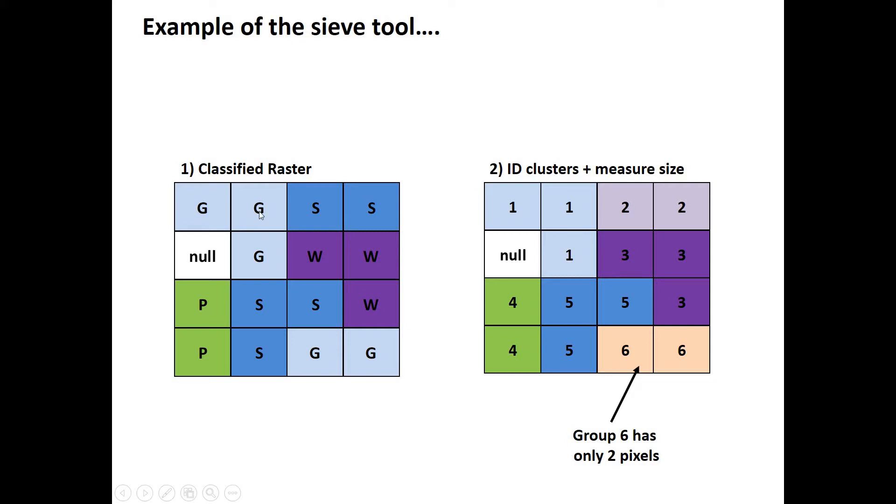Maybe G is ground, S is sand, W is water and so on. The problem is that maybe you have some isolated clusters in here that aren't very big and you want to get rid of them. The way that the algorithm works is first it goes through and it identifies all the clusters. It recognizes okay these three G pixels are connected to each other, so let's name that cluster number one.